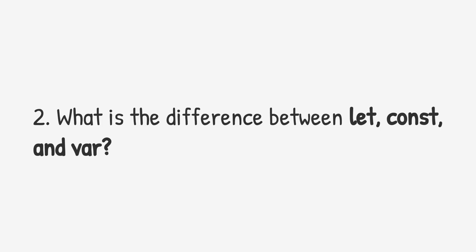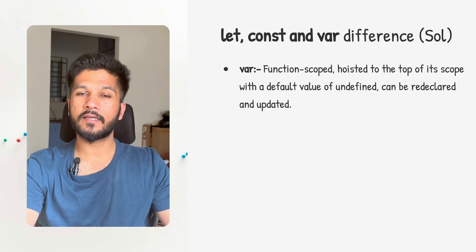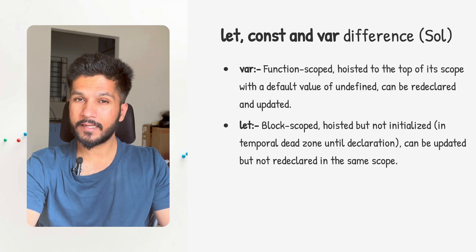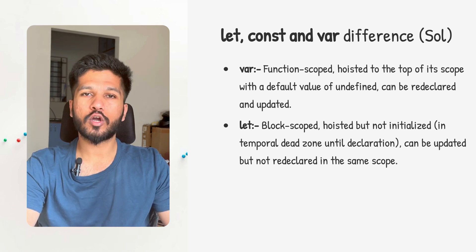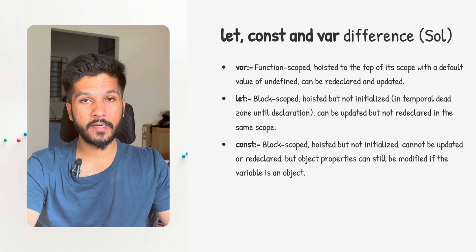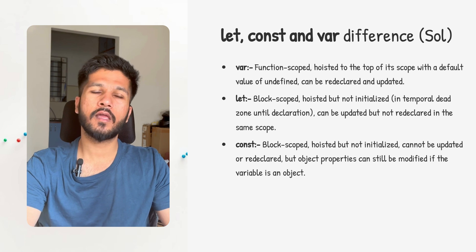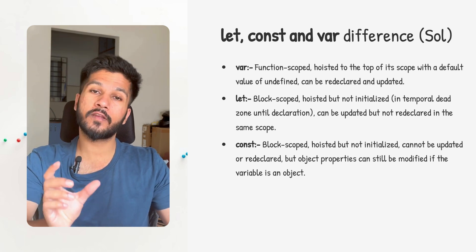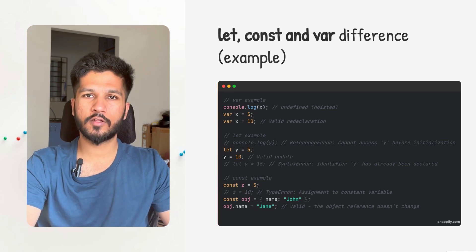Now let's move to the next question: the difference between var, let and const. Var is function scoped, hoisted at the top of its scope with a default value of undefined, and it can be redeclared and updated. Let is block scoped, hoisted at the top of its scope but not initialized — it stays in the temporal dead zone. It can be updated but not redeclared in the same scope. Const is also block scoped, hoisted but not initialized, and it stays in the temporal dead zone. It cannot be updated or redeclared, but object properties can still be modified if the variable is an object.